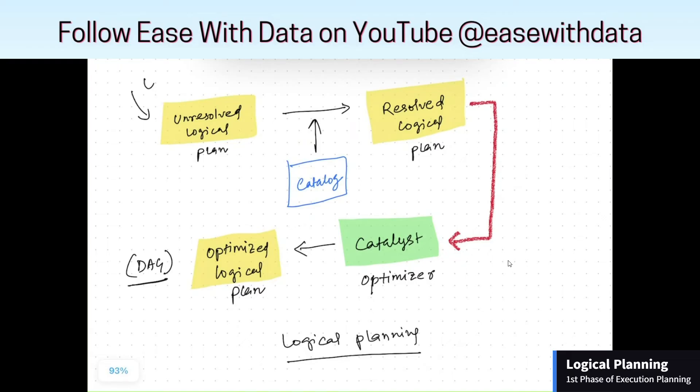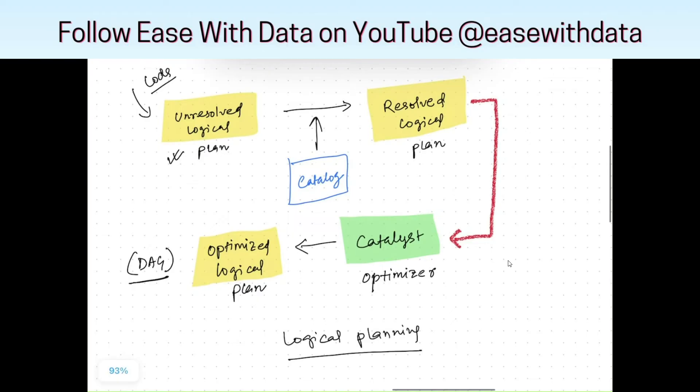Once the code is supplied by the user, Spark creates an unresolved logical plan. This unresolved logical plan is validated against the catalog in order to validate the column names and the table names. Once this validation is done, Spark creates a resolved logical plan.